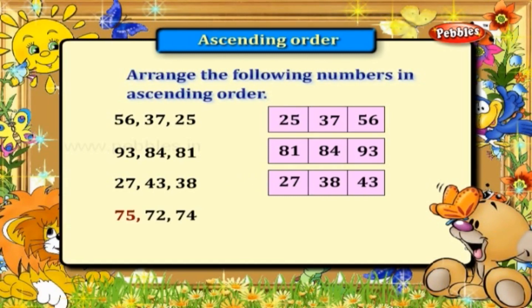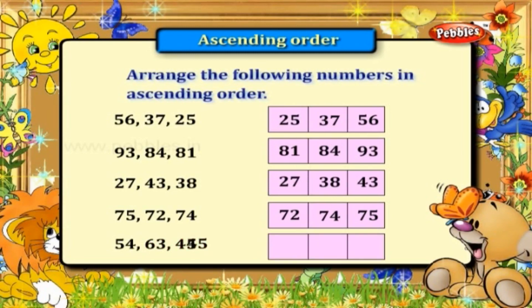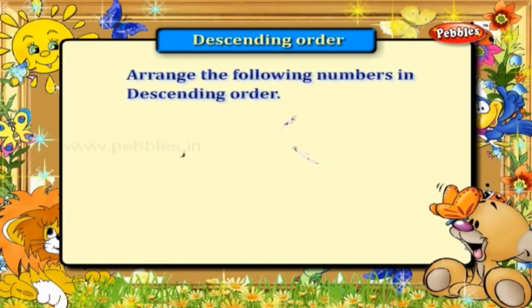Next: 75, 72, 74. The order is 72, 74, 75. Next: 54, 63, and 45. The ascending order is 45, 54, and 63.